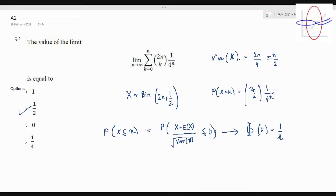So let's see how we have done it. Summation from k equals 0 to n of 2n choose k by 1 by 4 to the power n is actually - observe - this is actually binomial 2n comma half, X equals k probability.